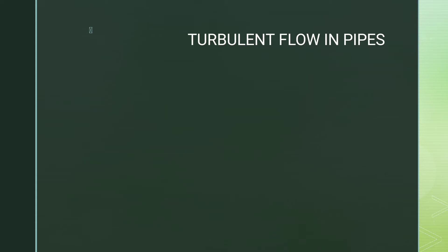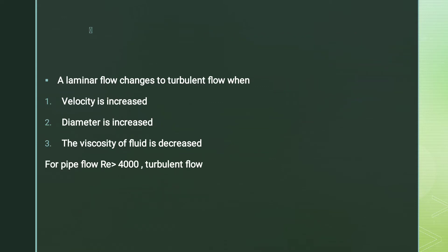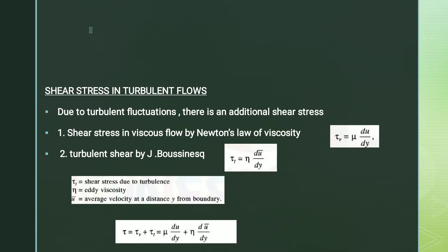Now we will discuss these questions in turbulent flow in pipelines. When the Reynolds number is greater than 4,000, it is the turbulent flow. This is the range of the laminar flows. The main idea is that we do not have two analyses of the turbulent flow.